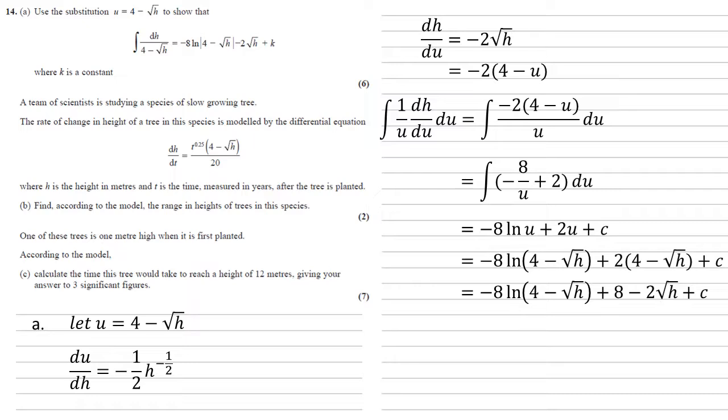Now if you see we've got c, which is a constant, we've got 8, which is a constant, so if we bring them together, let them equal k as in the question, we get minus 8 log natural 4 minus root h minus 2 root h plus k, as required.